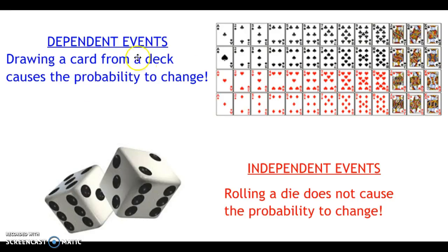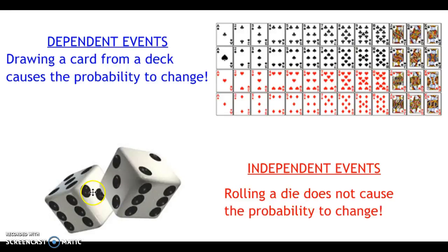For example, dependent events feature drawing a card from a deck, causing the probability to change. If you were to draw this ace of clubs, you would no longer have that ace of clubs in the deck and your probabilities would change. However, if you roll a die — one fair die or two dice as shown here — that does not cause the probability to change. If you roll a die and get a six, that does not change the probability of you getting a six next time.